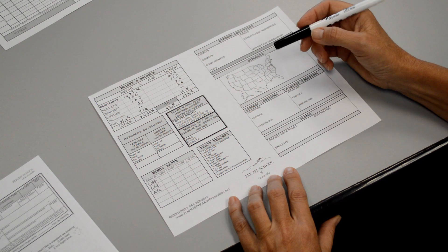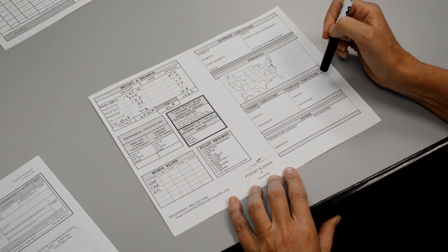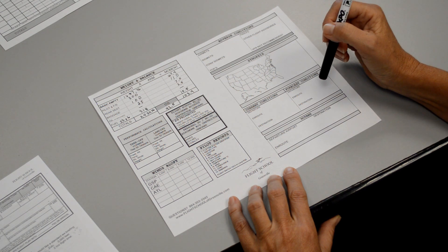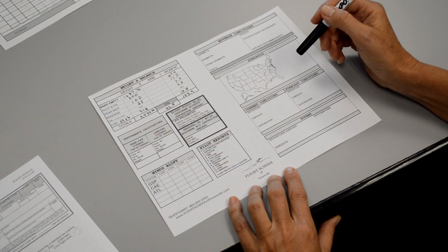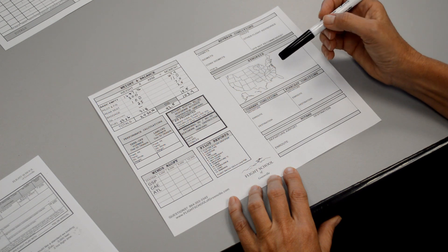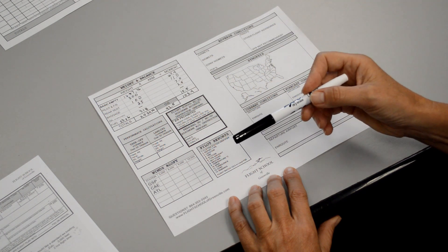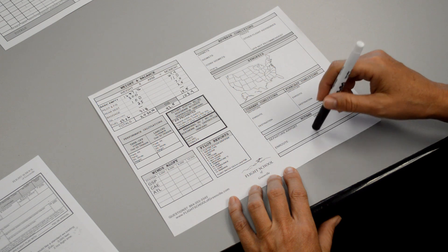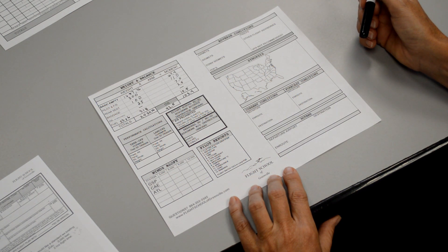And then they give the forecast conditions for the departure and the destination. Then they usually give us some sort of area forecast, which is just kind of an overview of all the weather. And then they'll give us the winds aloft, and then finally any NOTAMs pertaining to the airports that we intend to use today.